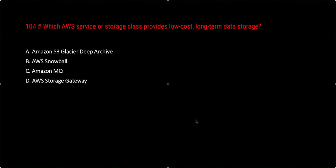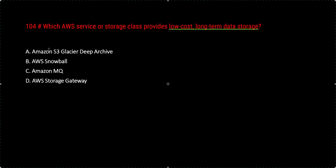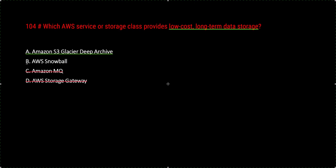Question 104: Which AWS service or storage class provides low-cost, long-term data storage? Whenever you see 'low cost' and 'long term,' pick S3 Glacier Deep Archive — it is the lowest cost storage option. AWS Storage Gateway is just a gateway and doesn't store data. Amazon MQ is a queue service. AWS Snowball is a physical migration device, not long-term storage.